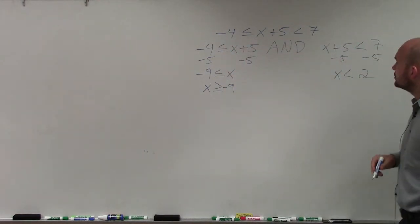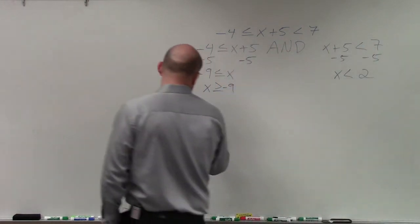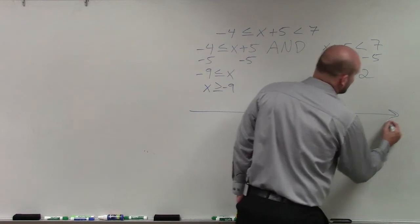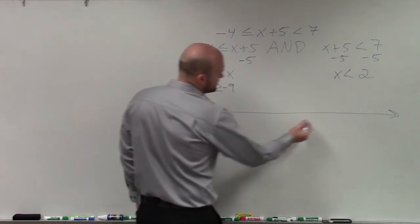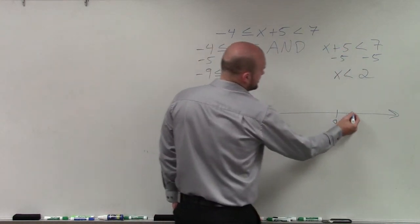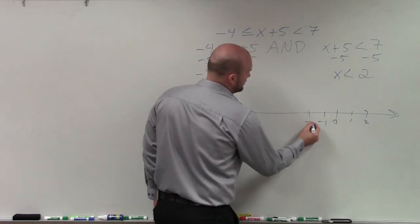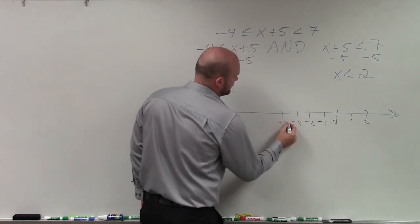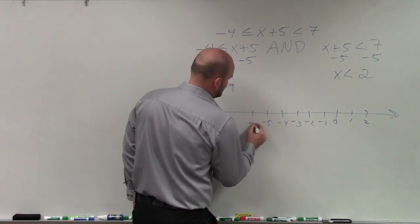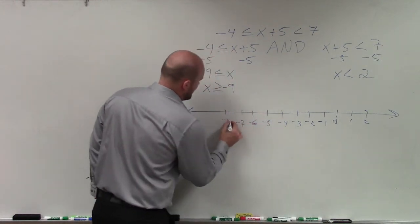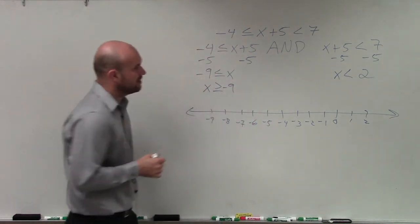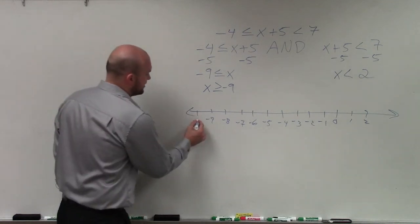All right? So when creating my table of values or my number line, I'm going to want to make sure I create a number line that has 0, 1, 2, negative 1, negative 2, negative 3, negative 4, negative 5, negative 6, negative 7, negative 8, negative 9. You want to make sure it includes both of these values.